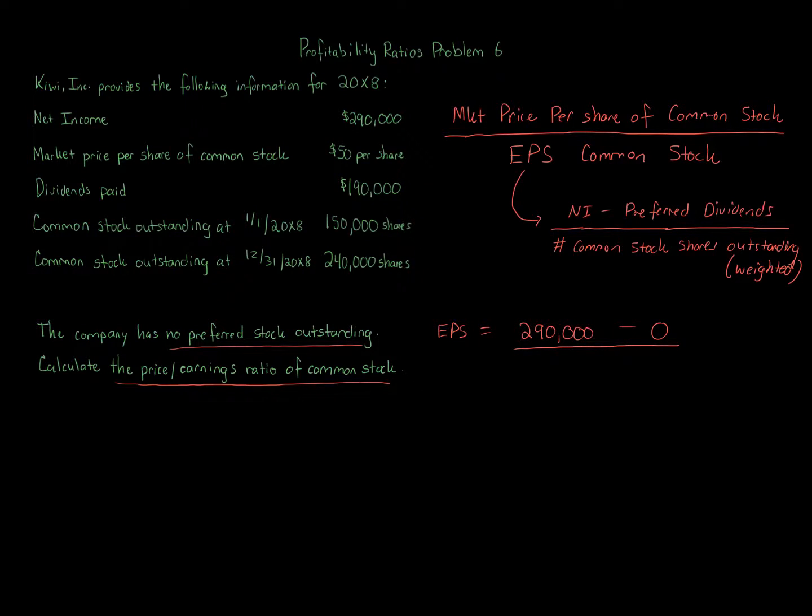So numerator $290,000 divided by our denominator. We've got weighted shares because we have common stock outstanding at the beginning and ending of the year 20x8: 150,000 shares and 240,000. So we're gonna have to average those two numbers together. So 150,000 plus 240,000, and we take the average of those two.